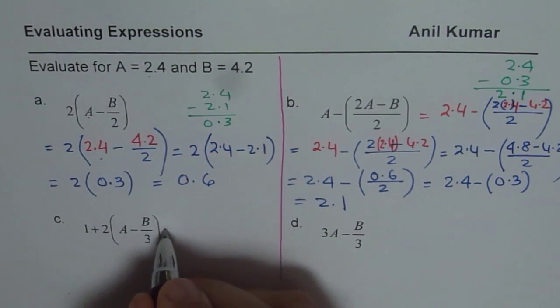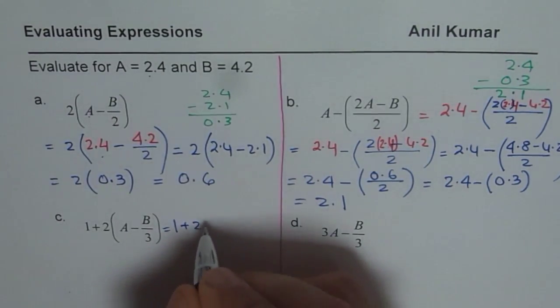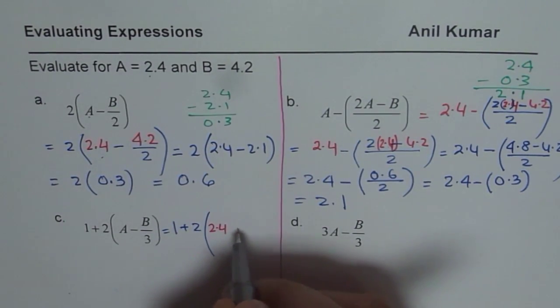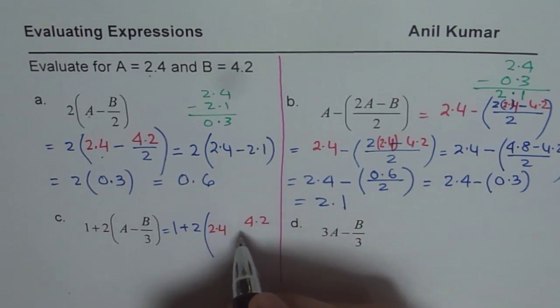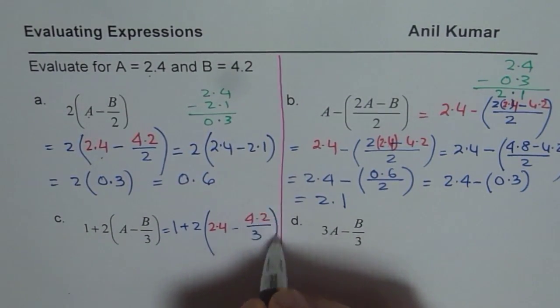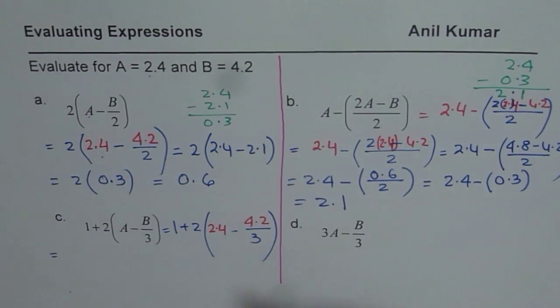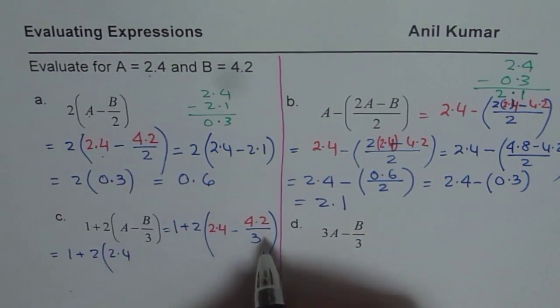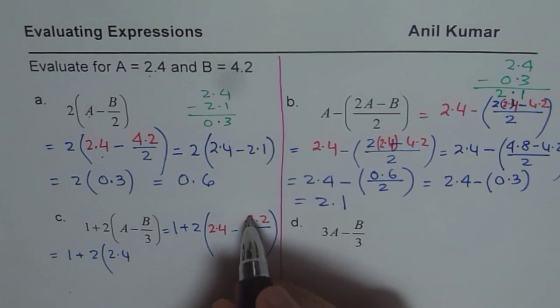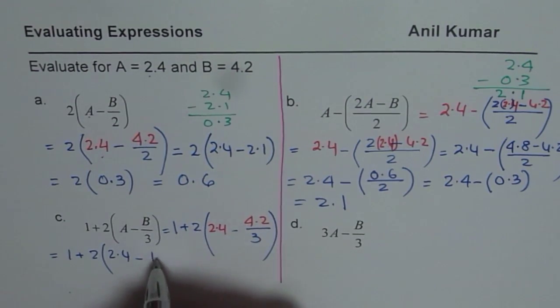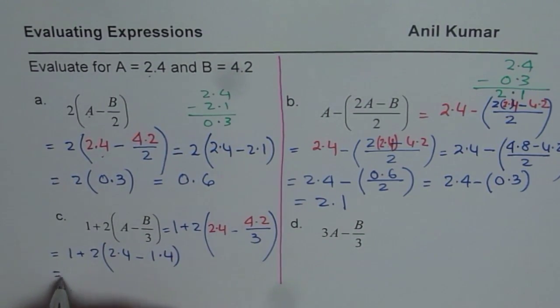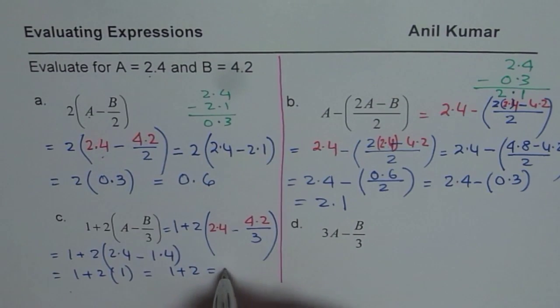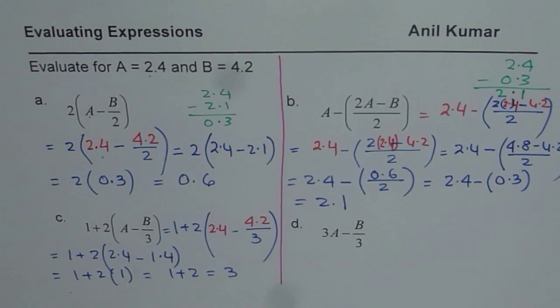So first step, of course, will be you need to write this as 1 plus 2 times A value which is 2.4, and then take away B value is 4.2. So it is 1 plus 2 times 2.4, one third of 4.2 divided. So 4 goes 1 time, take away 1. So you get 12 times 4. So when you do this, you get 1 plus 2 times 2.4 take away 1.4. So you get 1 plus 2 which is indeed 3. So that is how you could actually evaluate.